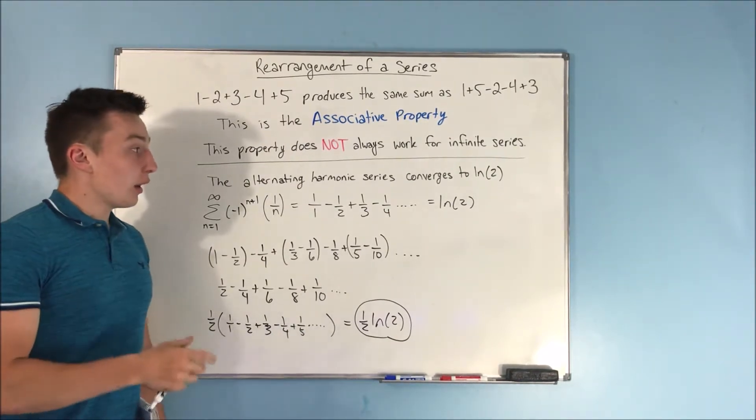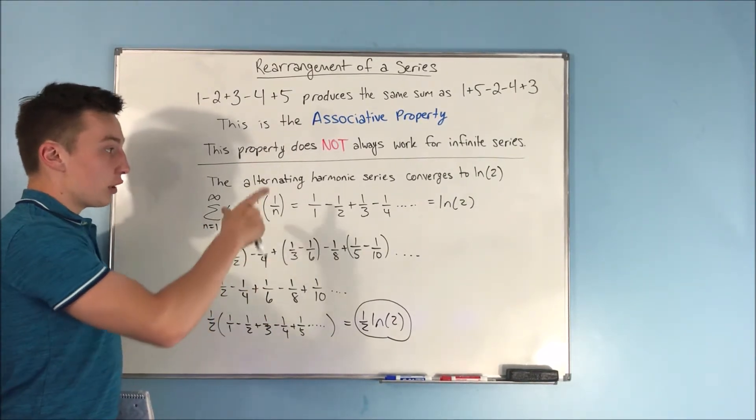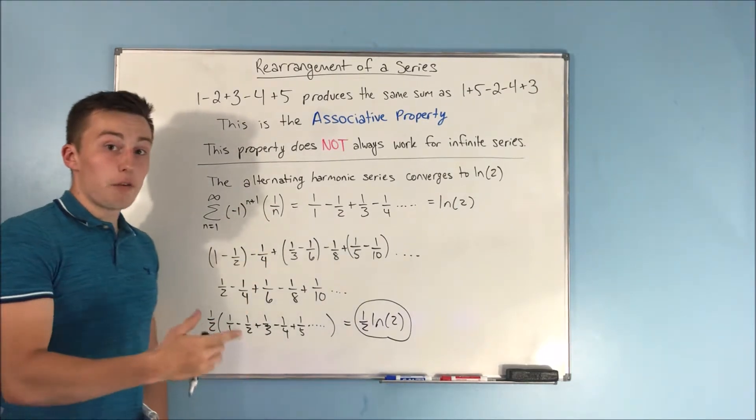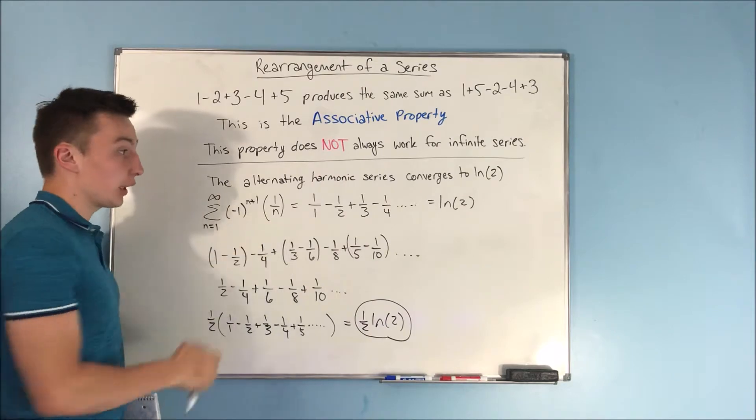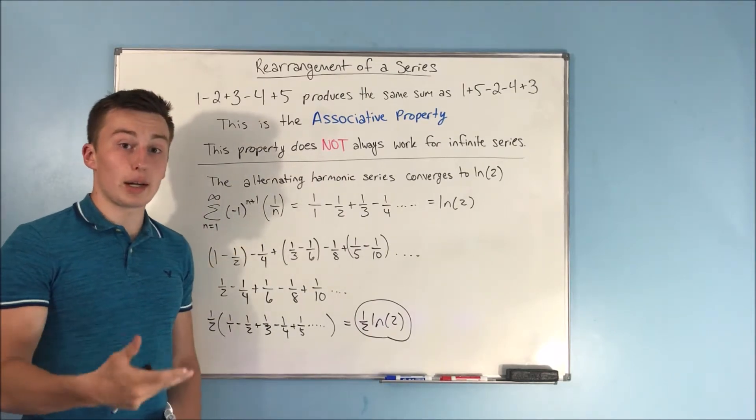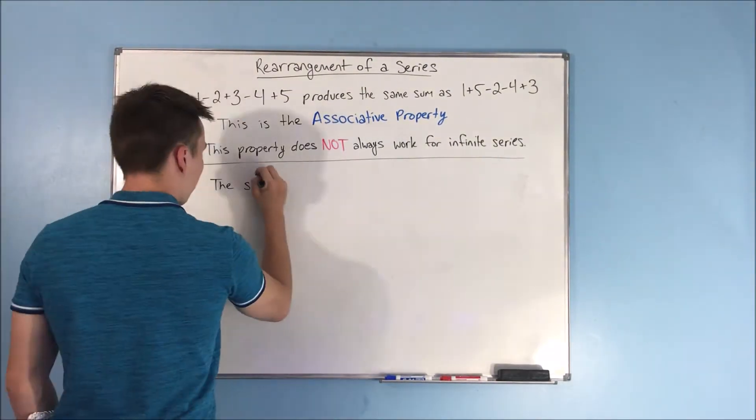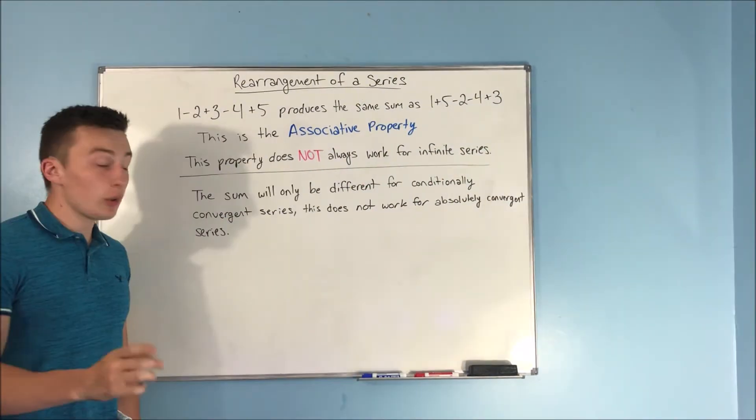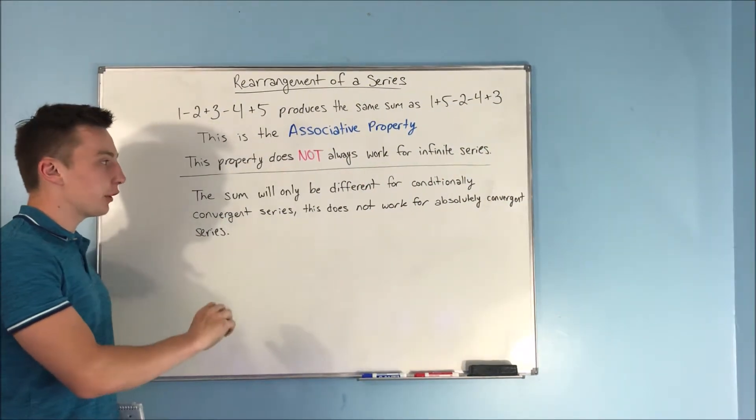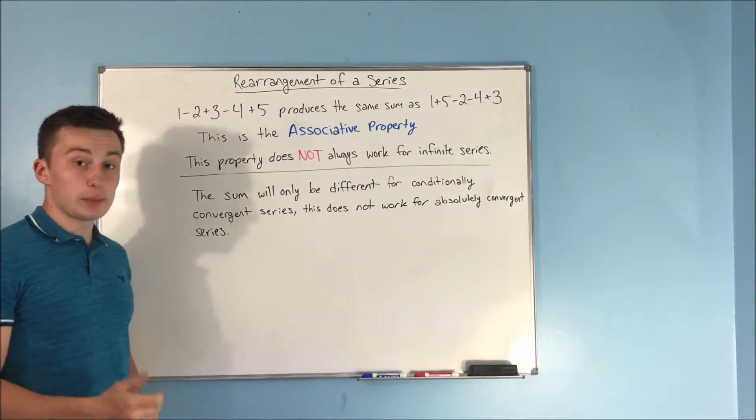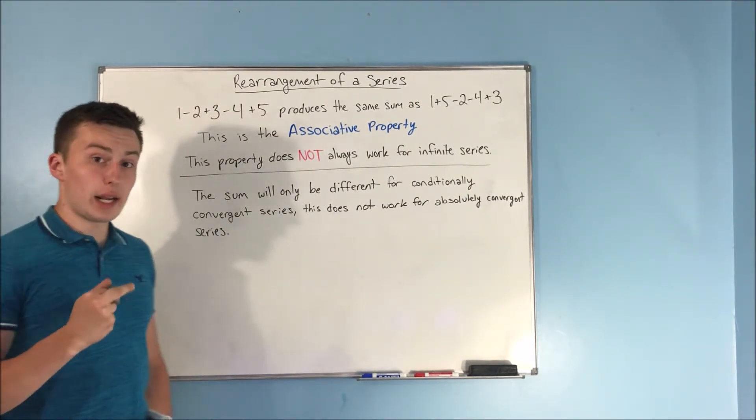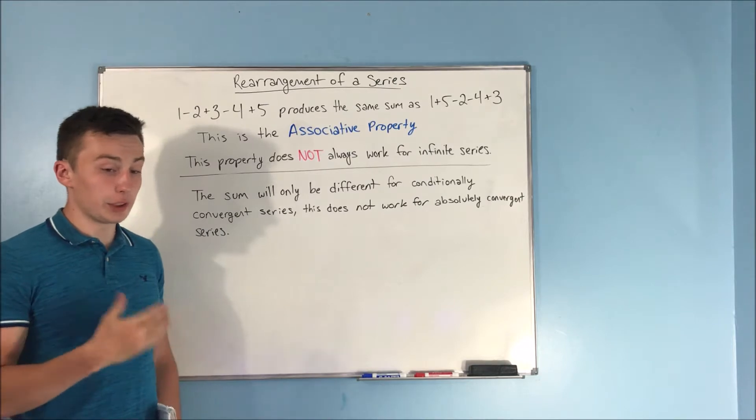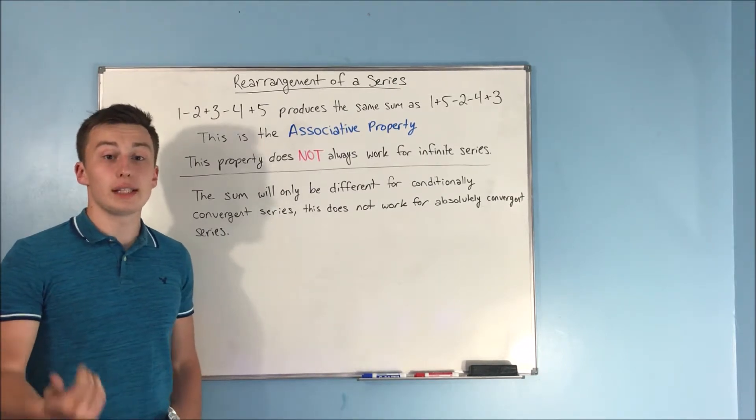So now this only works, you can only get a different sum for something that is conditionally convergent. For a series that is conditionally convergent like the alternating harmonic series. For a conditionally convergent series, if you rearrange the terms, you can produce a different sum. But this will not work for an absolutely convergent series. You can rearrange the terms all you want. You'll still get the same sum.